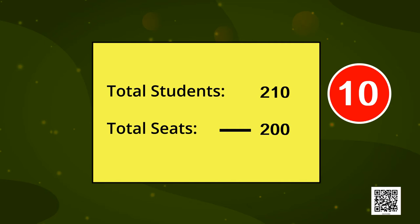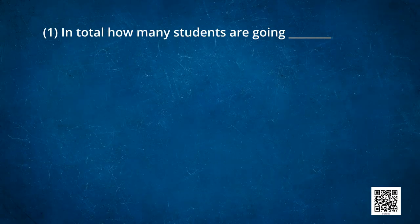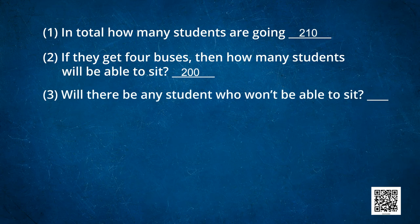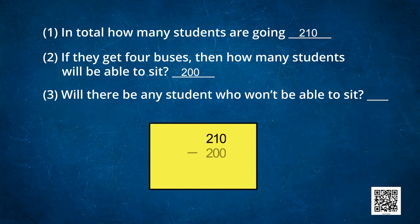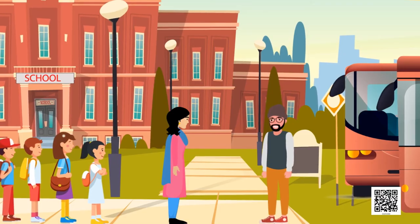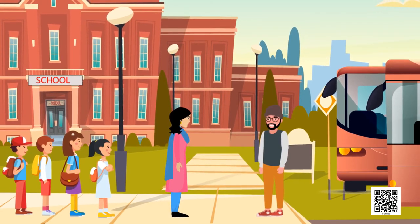Let's review what we found: in total, 210 students are going. If they get 4 buses, 200 students can sit. There will be students who won't be able to sit — we subtracted 200 from 210 and got 10 students left. But then some students said they would adjust and sit together.